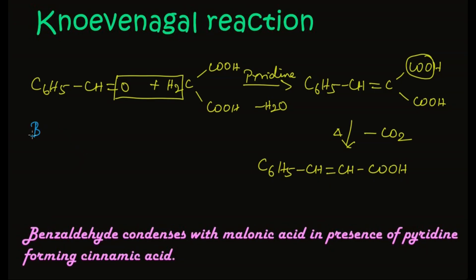Let's write the names for these structures. Benzaldehyde reacts with malonic acid in the presence of pyridine. Dehydration takes place, and we get a dicarboxylic acid as an intermediate. On further heating, carbon dioxide is evolved, and we get cinnamic acid.